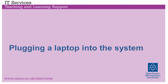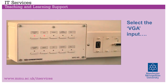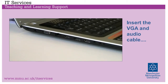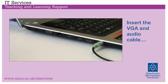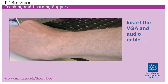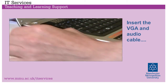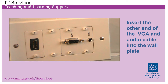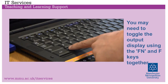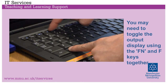Plugging a laptop into the system. Select the VGA input. Insert the VGA and audio cable, then insert the other end of the VGA cable into the wall plate. You may need to toggle the output display of your laptop using the function and F keys together.